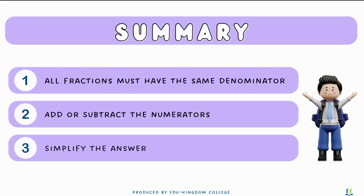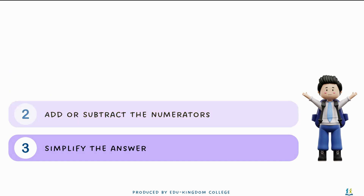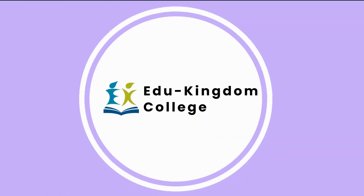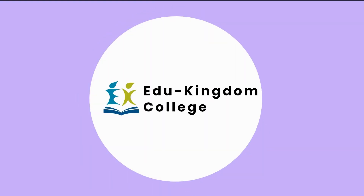Just a quick summary of the steps to adding and subtracting fractions: first, all fractions must have the same denominator; second, add or subtract the numerators according to the question; and lastly, simplify the answer. This is it for this video — for more math and English content please check out our channel.